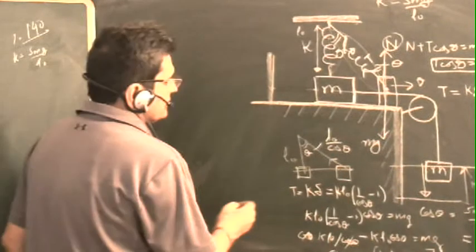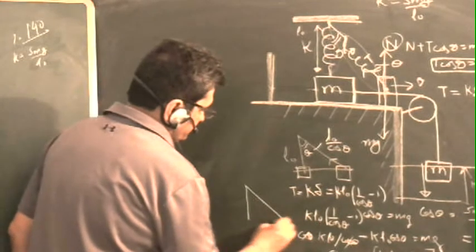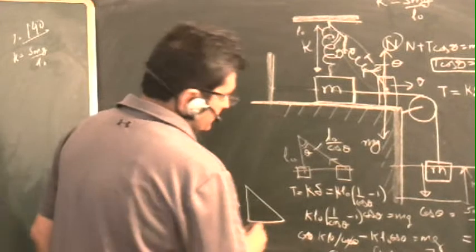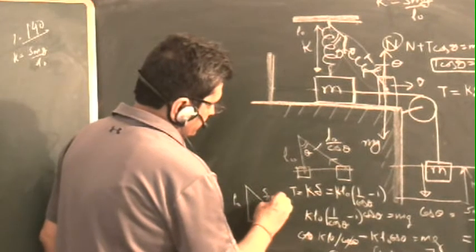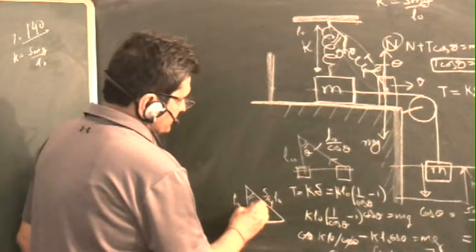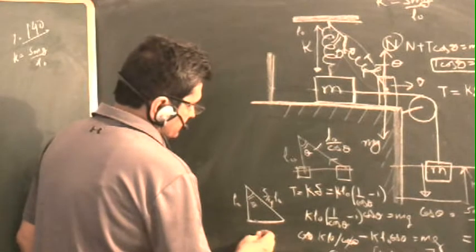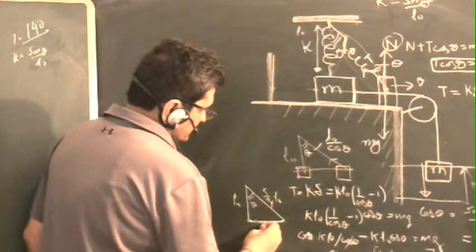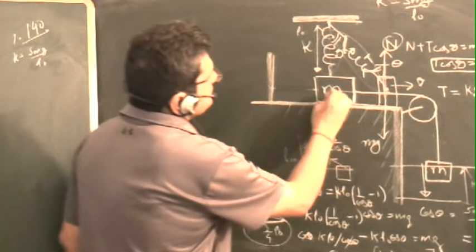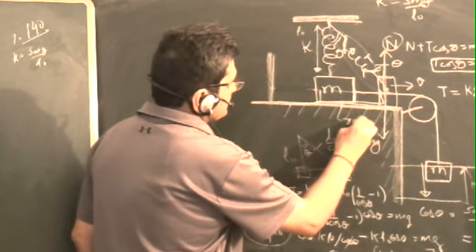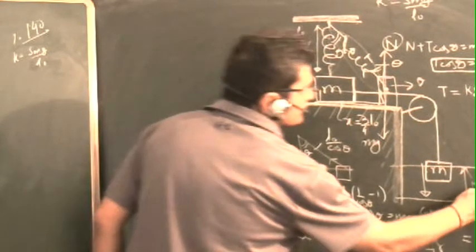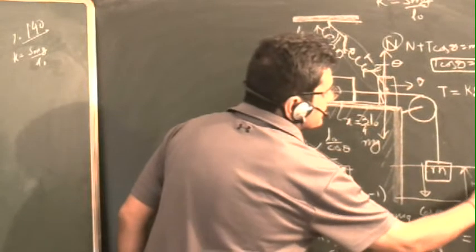So cos theta is 4 upon 5. Now, if we take this as L0, then this is L0 upon cos theta, which is 5 upon 4 L0. And this will be 5 upon 4 L0 minus L0, which is 1 upon 4 L0. So the distance traveled here, this distance x, is equal to 3 upon 4 L0. This is the same distance fallen by the mass M.